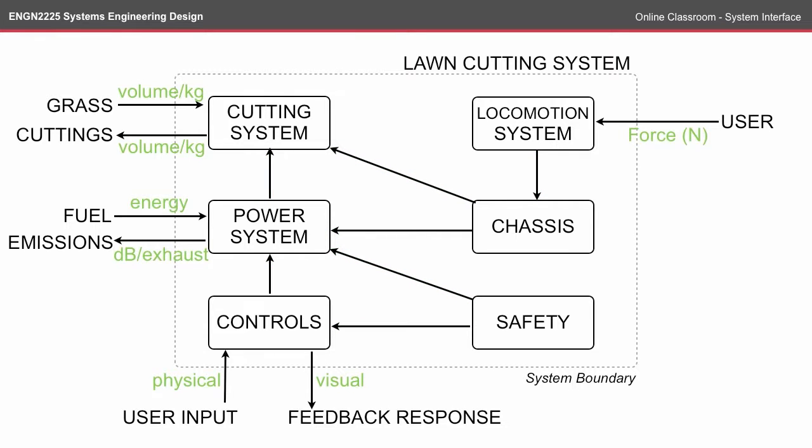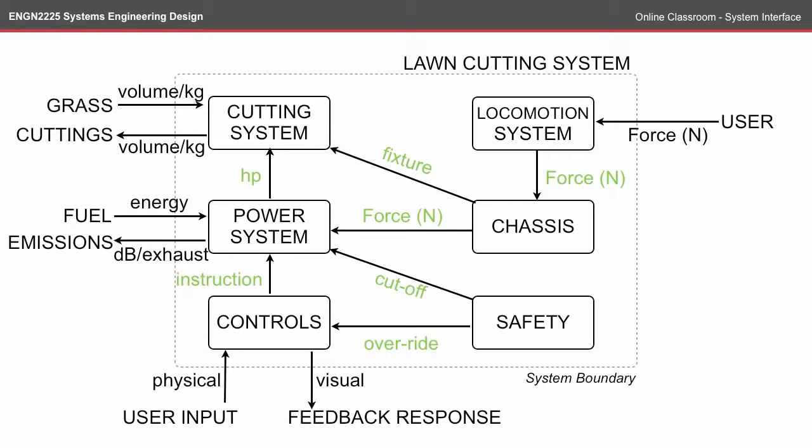The next step is to identify what those relationships are or how they could be measured. Where appropriate there's a unit, but usually there's just an indication of what the interaction is. For example, the grass in volume or kilograms is an input to the cutting system, and as a result the cutting system will output some volume or kilogram of cuttings. Likewise, fuel is an input to the power system, and the power system will emit either exhaust or noise. You also need to identify the relationships inside the subsystem — for example, the locomotion system has some sort of force on the chassis, and the control system has some sort of instruction to the power system. At the moment it's difficult to apply units to these relationships because we're not exactly sure how the system is going to look, but there is a relationship there and that's been identified.